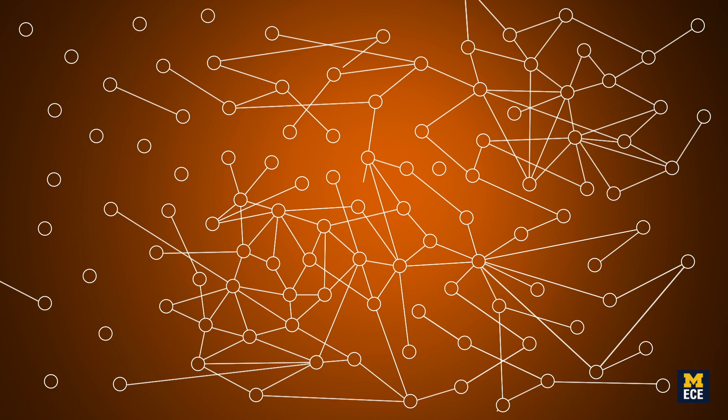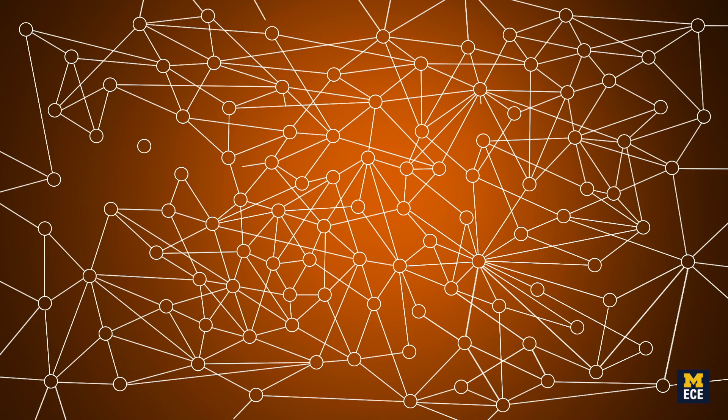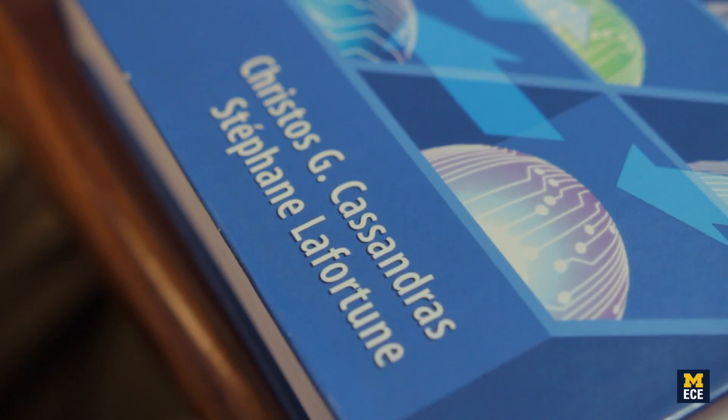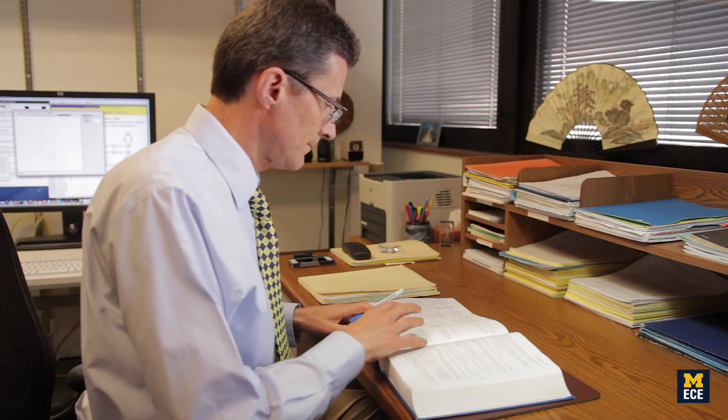Now imagine that you have literally hundreds of these rules, so your intuition cannot predict what's going to happen. That's where discrete event systems come in, because that's an area of research in control engineering that's at the interface with formal methods in computer science. Our goal is to come up with methodologies that will significantly reduce the time it takes to do the verification and validation of these complex automated systems.